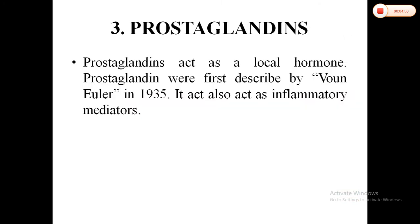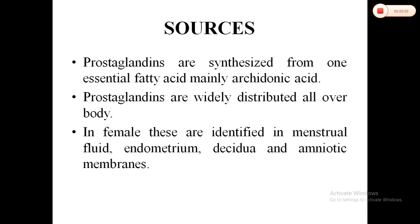Prostaglandins act as local hormones. They were first described by Von Euler in 1935 and also act as inflammatory mediators. Prostaglandins are synthesized from an essential fatty acid, mainly arachidonic acid, and are widely distributed all over the body. In females, they are also found in menstrual fluid, endometrium, and amniotic membrane.